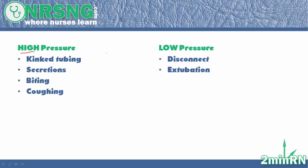First is the high pressure alarm, second is the low pressure alarm. When a high pressure alarm sounds, what's happening is the ventilator is trying to force that oxygen into the lungs and it's not able to get it in there. One cause is a kinked tube — oxygen is coming but it senses it's not able to get in there. It's pushing and pushing but there's too much pressure so it's not able to deliver that oxygen.